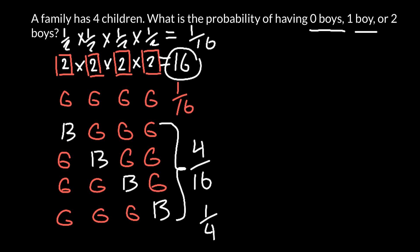If we ask what is the probability of having two boys, now it would be much more complicated — we have to write down all possible combinations. And probably it's going to be easier to solve this problem using Pascal's triangle. So how do we build Pascal's triangle? Take a look.